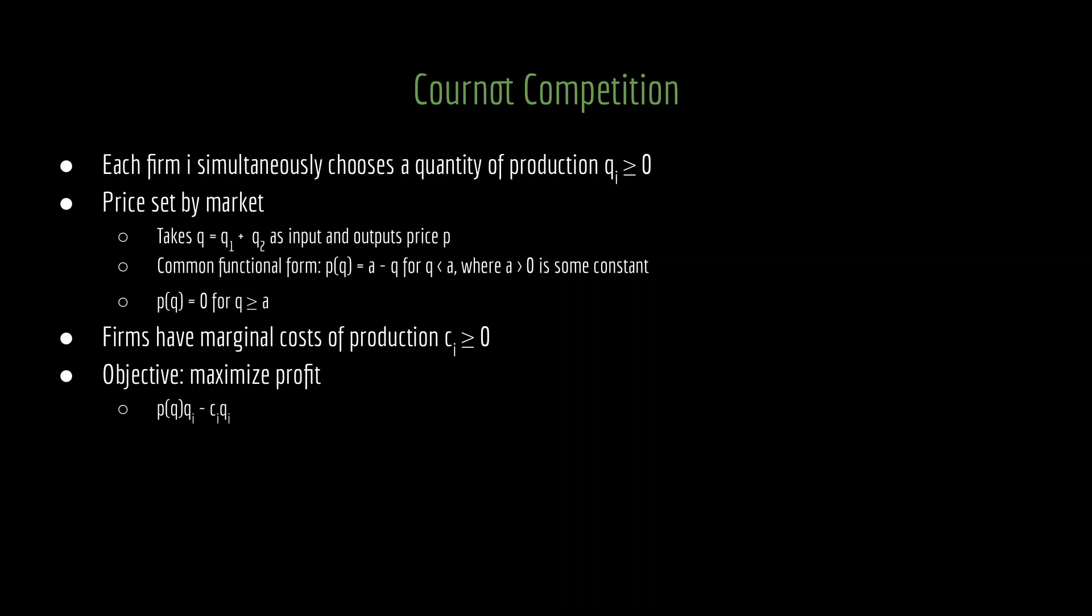You can think about a as the consumer that cares most about this good - what is that consumer willing to pay. Then you subtract out q, and that is your price. Because we have negative q, this gives us the intuitive fact that as quantity increases, price goes down. That's simple supply and demand. When the market is flooded with the good, the price needs to go down. We account for negative prices by saying the price is a - q as long as q is less than a, and when q is larger than a, it equals zero. The price has a floor of zero.